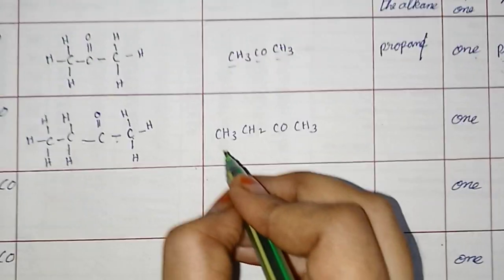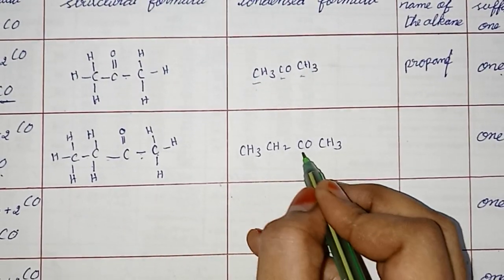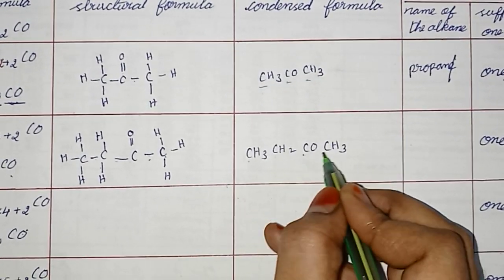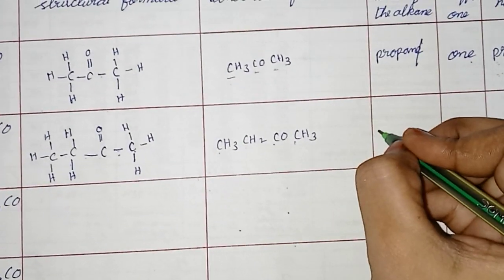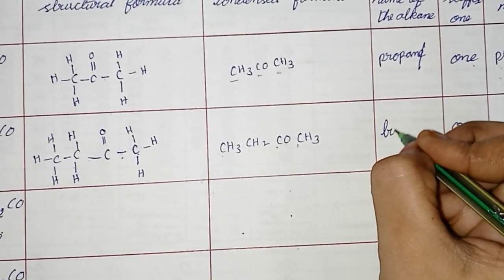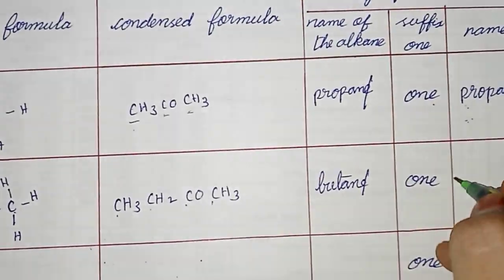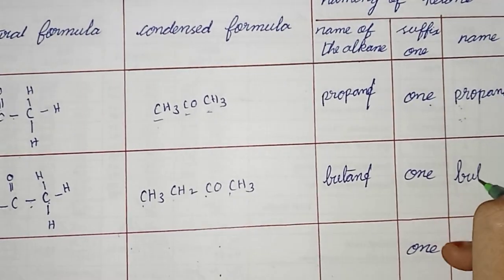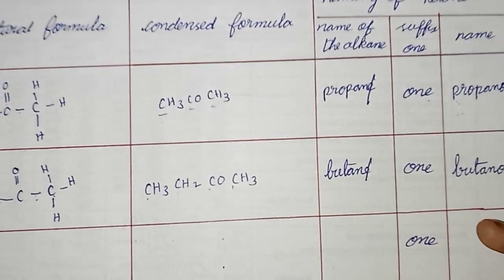Now naming: count carbon atoms — 1, 2, 3, 4 — meth, eth, prop, but. For the alkane, butane. Cancelling 'e' and adding '-one' gives butanone.